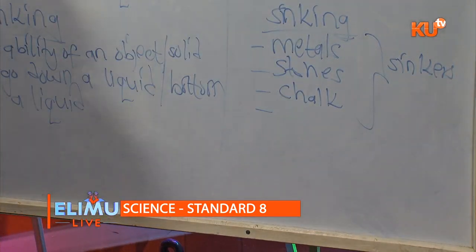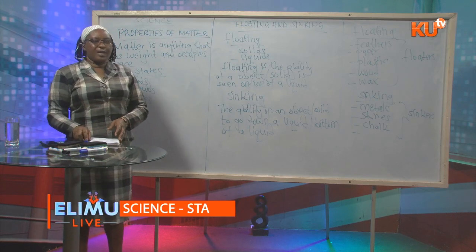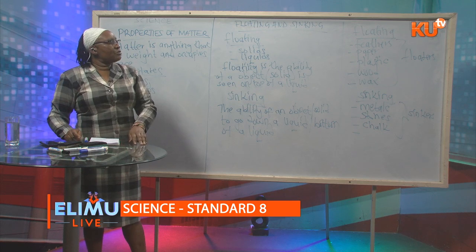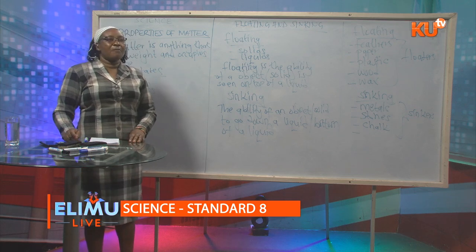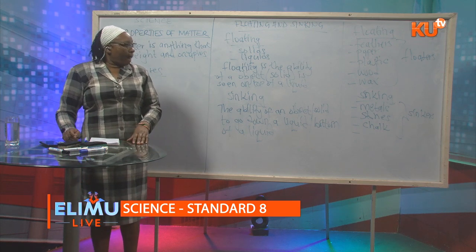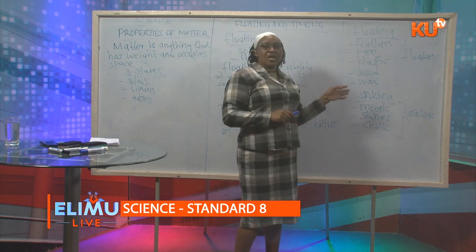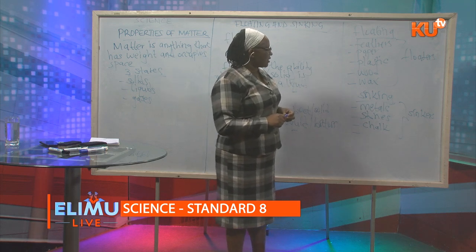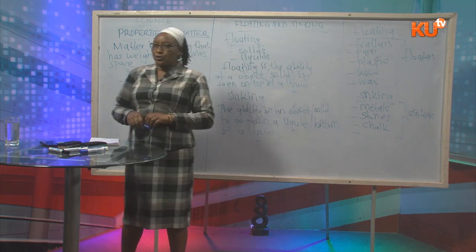The items that float are called floaters and the items that sink are called sinkers. This topic is important in our daily lives. For example, when somebody drowns, if you hold on to a log of wood — wood is a material that floats — however big that piece of wood is, it will always float, so that person will not sink.